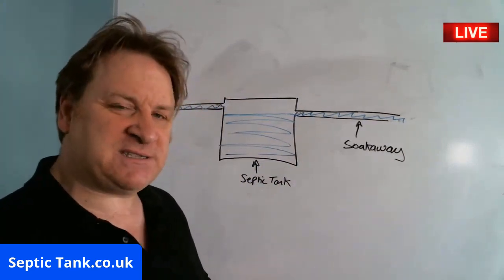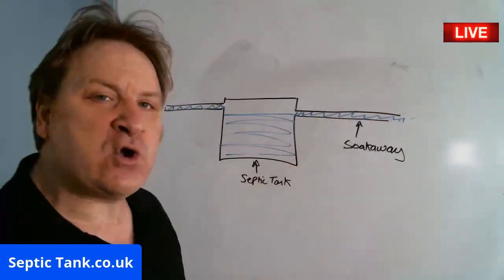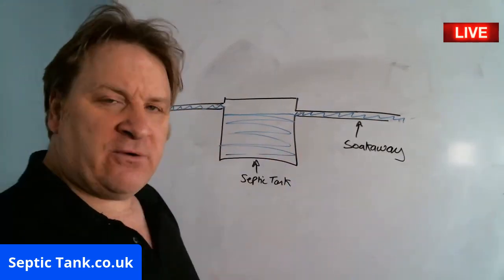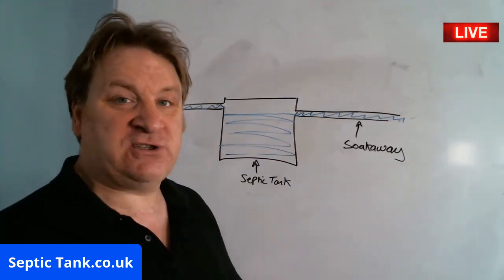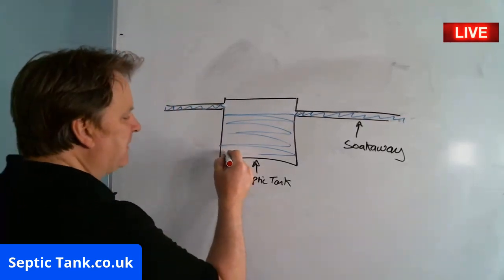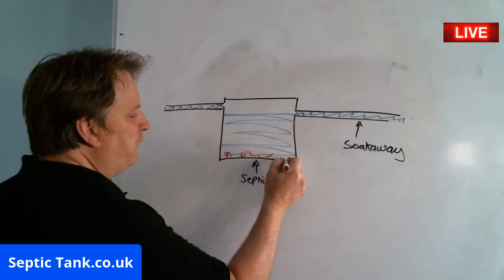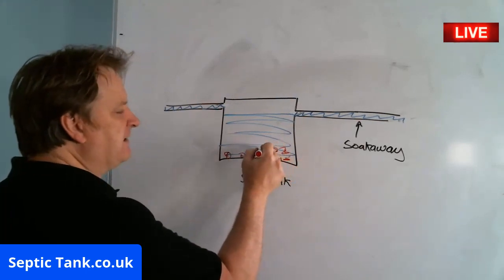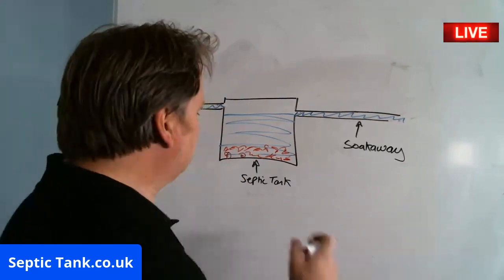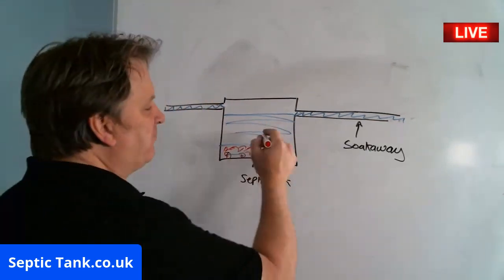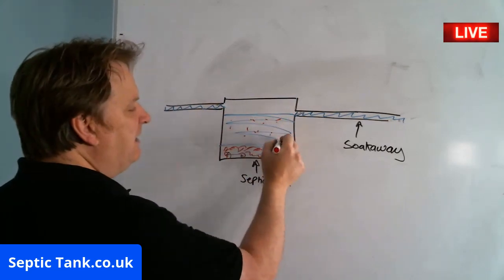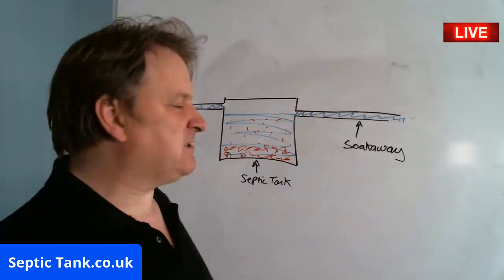What happens over time is, starting with the septic tank itself — you've got fat, grease, solids, poo, hair, skin and stuff like that. All that builds up and falls to the bottom of the septic tank. But also, all this debris — the fat, grease and sludge — also floats in the water. It's called suspended solids.